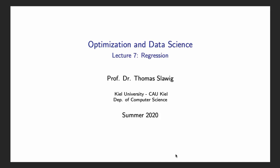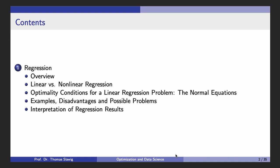Welcome to the seventh lecture in the course Optimization and Data Science. The topic of this lecture is Regression. After an overview, I will discuss the differences between linear and nonlinear regression. Then we will concentrate on linear regression problems and apply the optimality conditions from the last two lectures. This leads to normal equations, which provide one method to solve a regression model. I will speak about examples, disadvantages, and possible problems, and at the end, the interpretation of the results from regression.